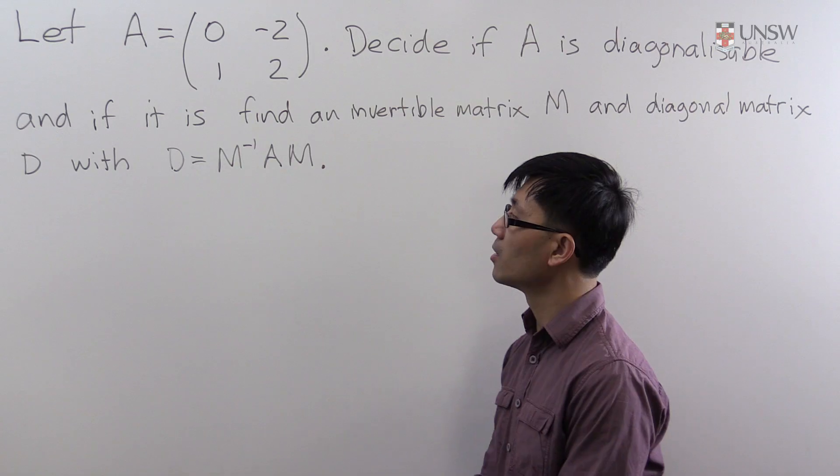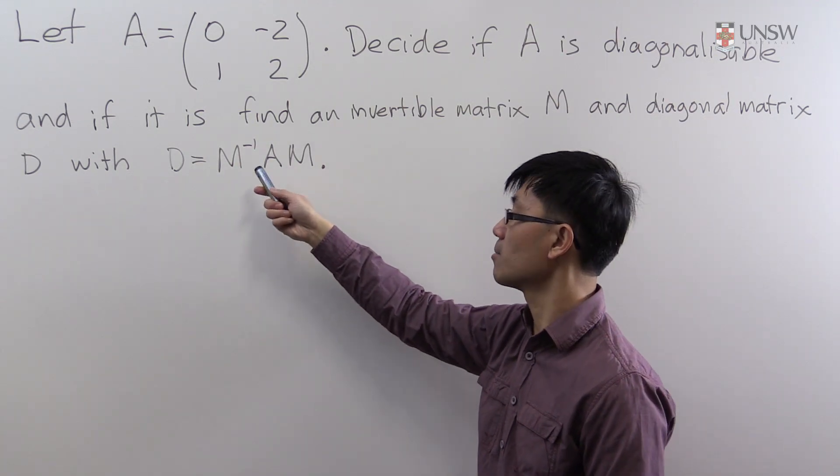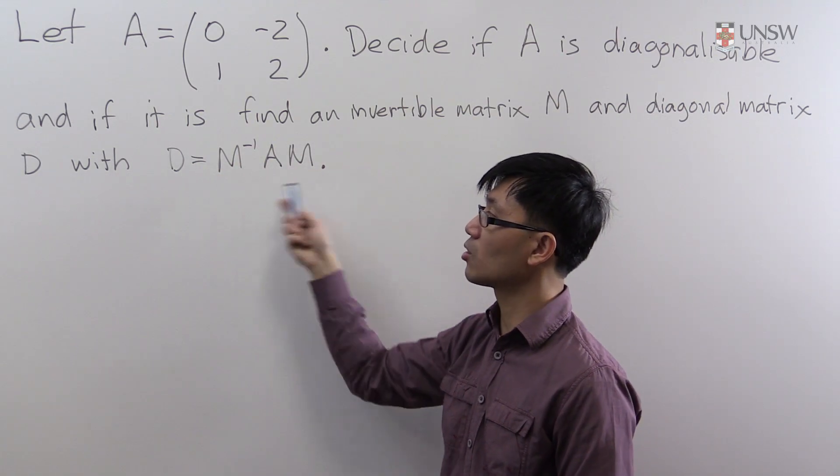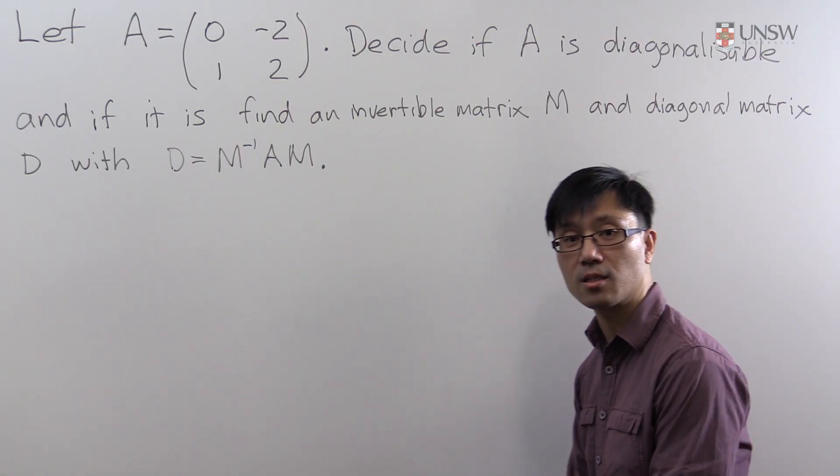Now finding this diagonal matrix D and this matrix M satisfying this equation is often called diagonalizing the matrix A.